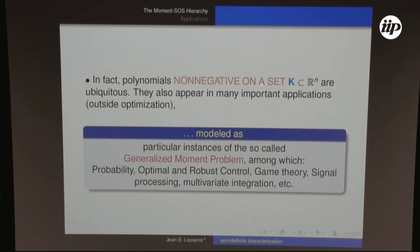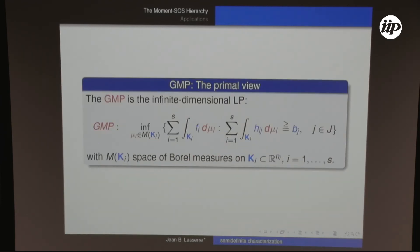Polynomials non-negative on a set K appear in many important applications outside optimization. As soon as you model your problem as an instance of the Generalized Moment Problem (GMP), this becomes relevant. The GMP has applications in many fields and is very simple to state in one line, with both a primal and dual view. The primal is an infinite-dimensional linear programming problem on a space of measures: minimize a linear functional over Borel measures μ_i supported on given sets K_i, subject to linear constraints.